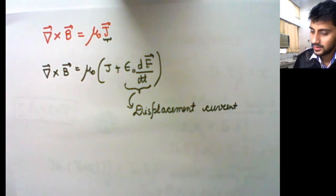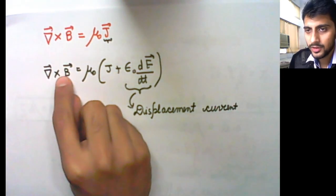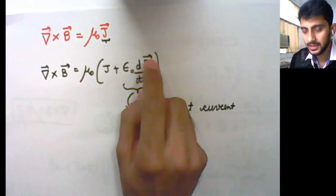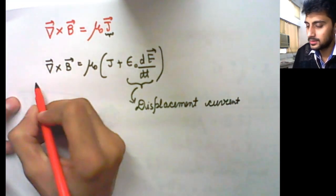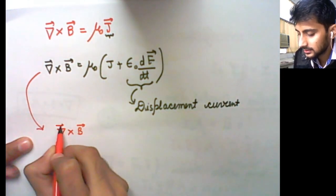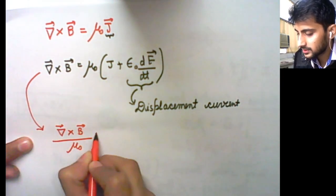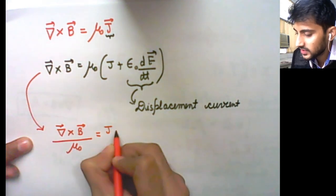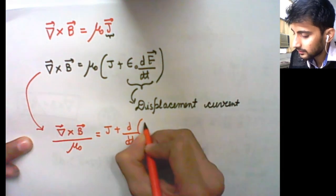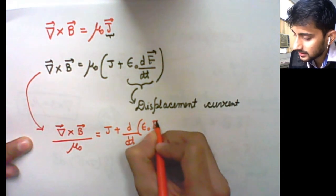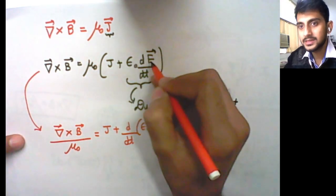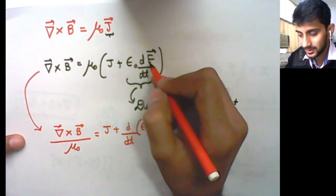This is the fourth Maxwell equation. You can note that if you divide B by mu naught it becomes H, and if you take epsilon naught inside with E it becomes D. So, doing some cosmetic changes, you get del cross B by mu naught equals J plus del by del T of epsilon naught E. Remember, epsilon naught is constant with respect to time, so only then can you take it inside the time derivative; otherwise there will be a problem.